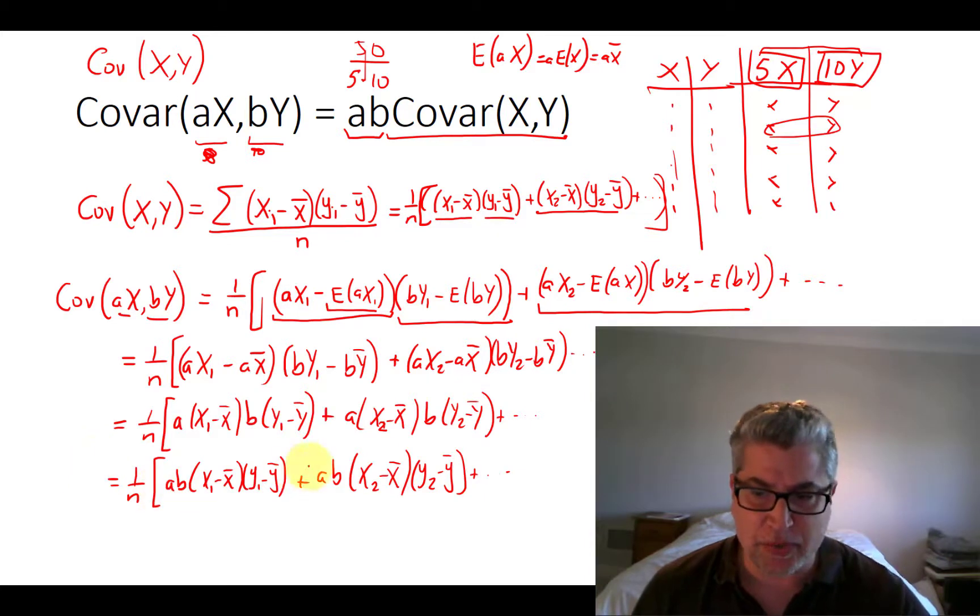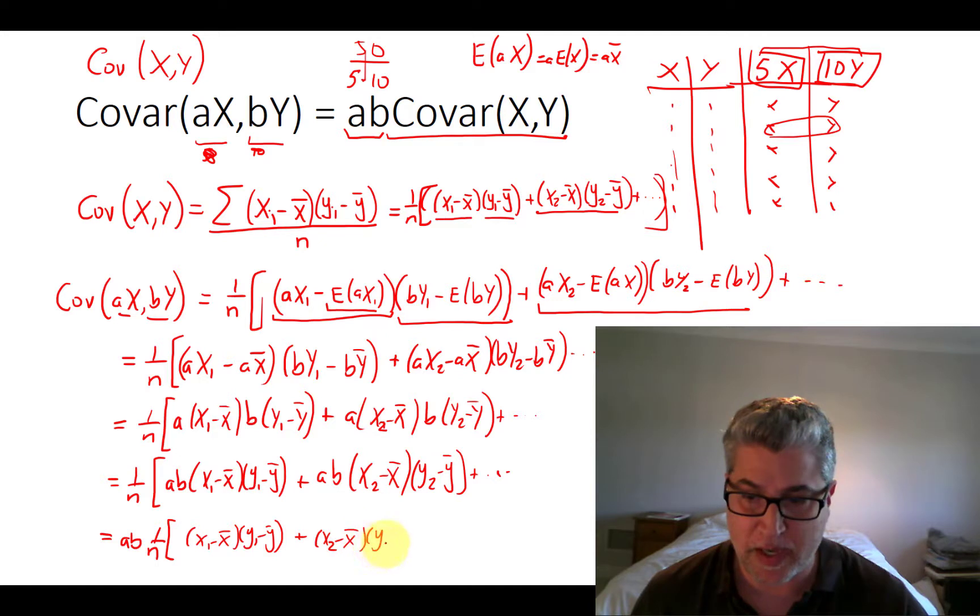This A, B term shows up in all of our additive terms here. So we can pull out that A, B. Leaving us with A, B, 1 over N. X1 minus X bar. Y1 minus Y bar. Plus, you pull out that A, B already. So we just have X2 minus X bar. Y2 minus Y bar. All the way to the end. Xn minus X bar. Yn minus Y bar.